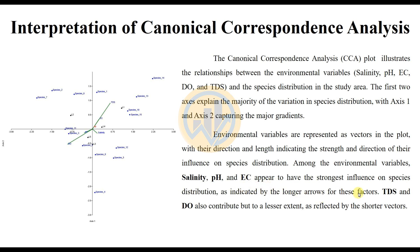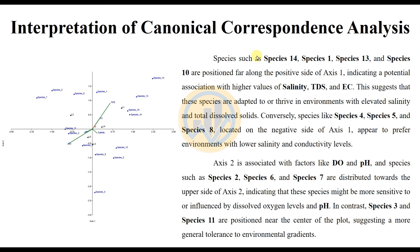DDS and DO also contribute, but to a lesser extent, as reflected by their shorter vectors. Species such as species 14, species 1, species 3, species 13, and species 10 are positioned along the positive side of axis 1, while the negative area of axis 1 is on the opposite side. This suggests those species are adapted to environments with elevated salinity and total dissolved solids.